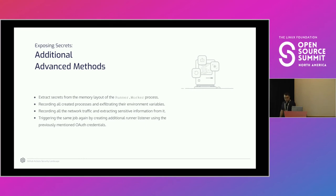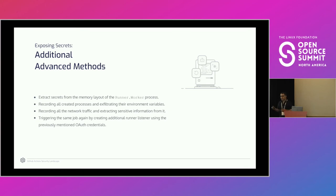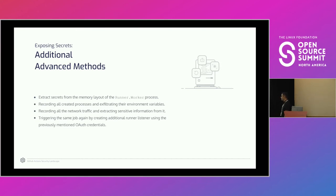Those were the simpler methods an attacker could apply. More advanced methods — out of scope for this talk — include inspecting the memory layout of runner processes, exfiltrating their environment variables, recording network traffic and extracting sensitive information from it, and more.